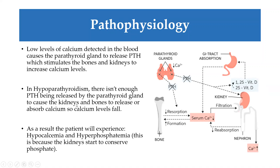Because the effect on the kidneys, bones, or gut absorption is insufficient, we end up with hypocalcemia — low levels of calcium — and hyperphosphatemia. The high phosphate is a result of conservation of phosphate from urination, since PTH is not promoting its excretion.